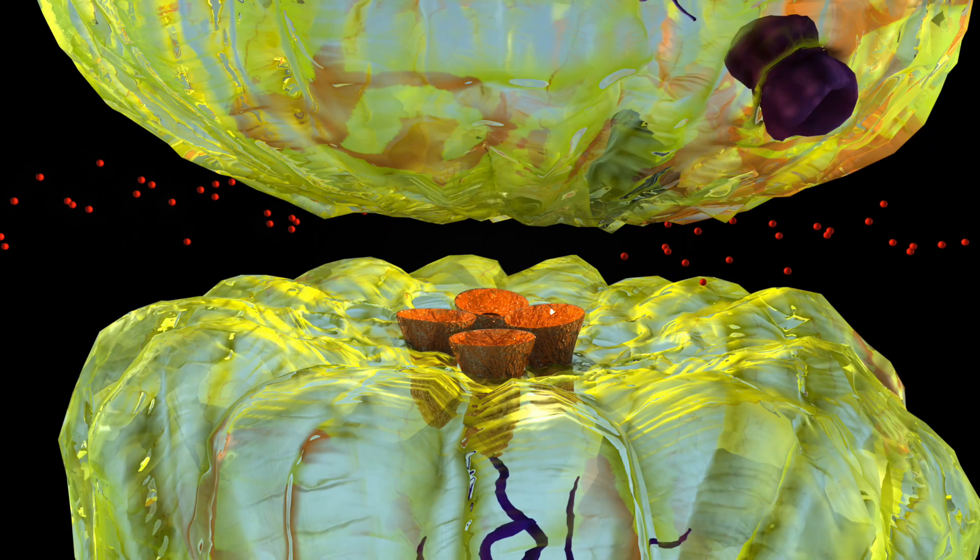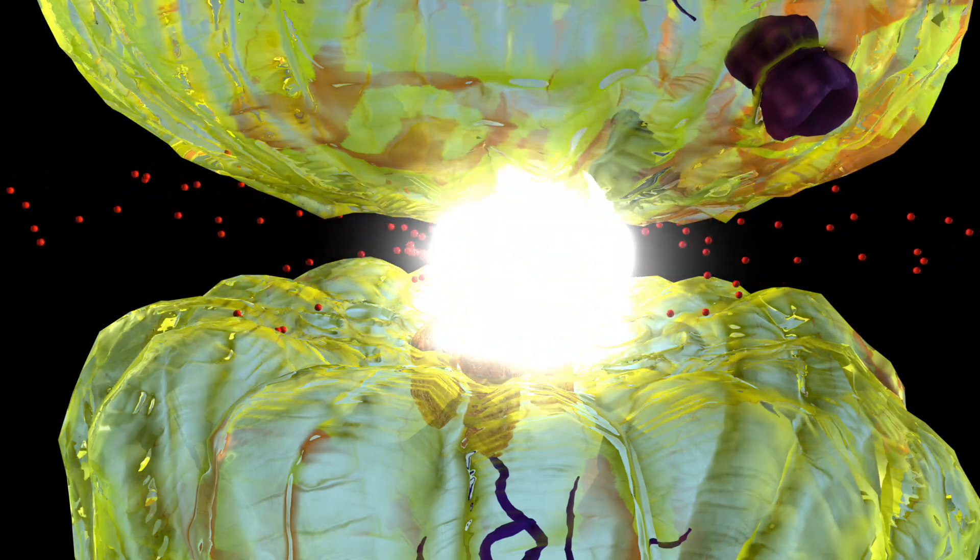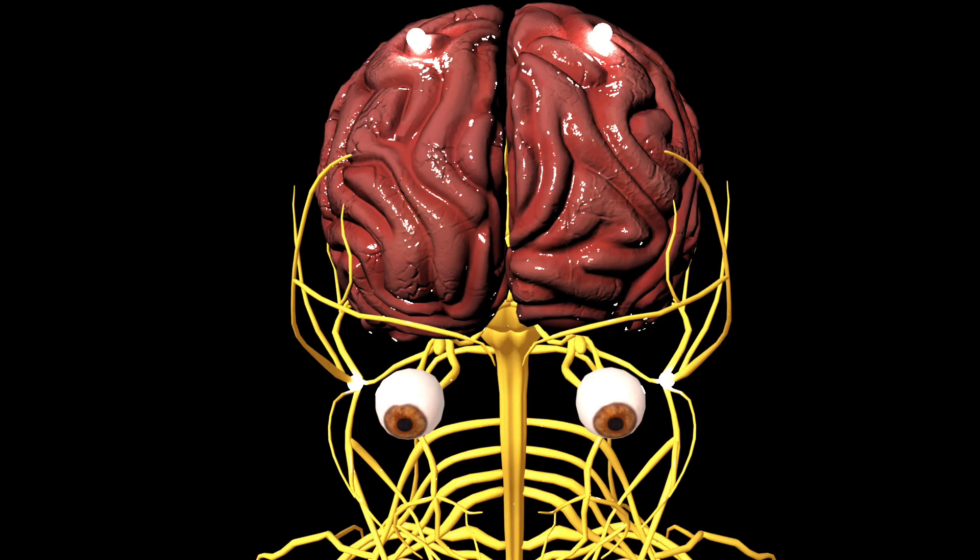When the KCNQ potassium channel closes, potassium is not able to enter the neuron. With reduced potassium entering through the channel, the electrical signal is transmitted throughout the brain.